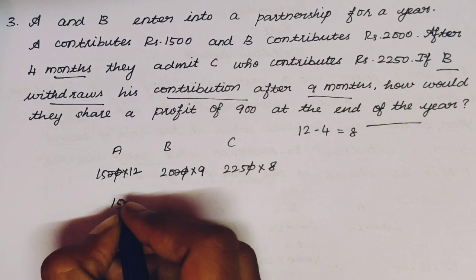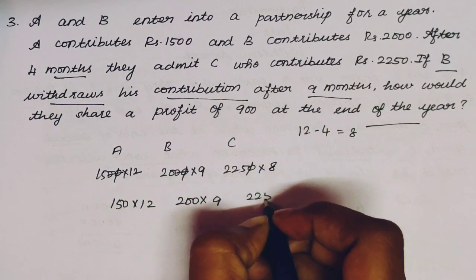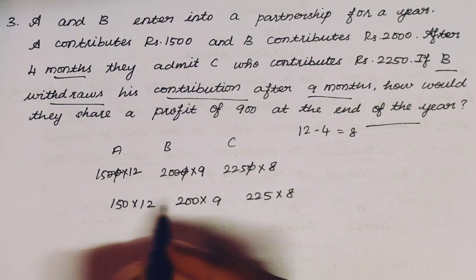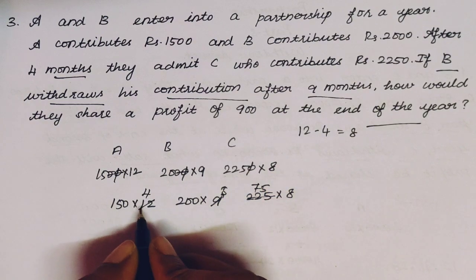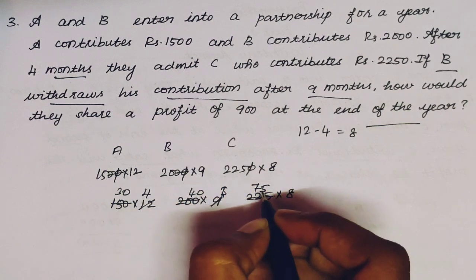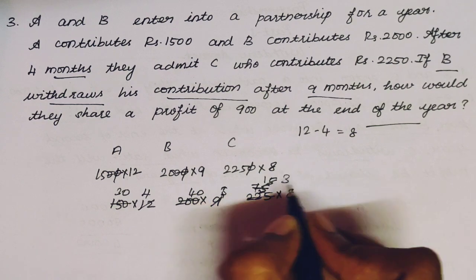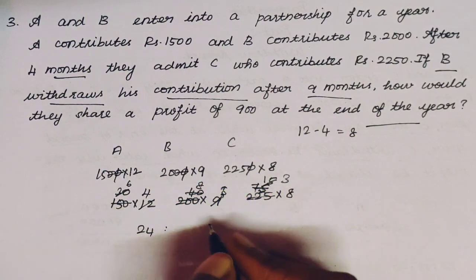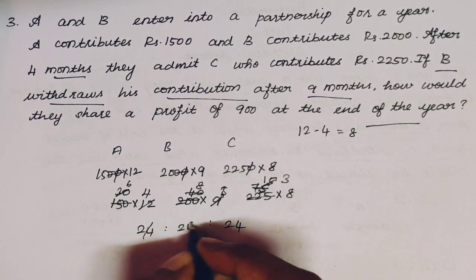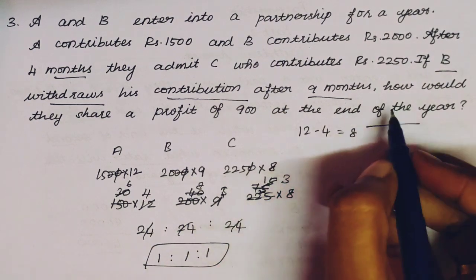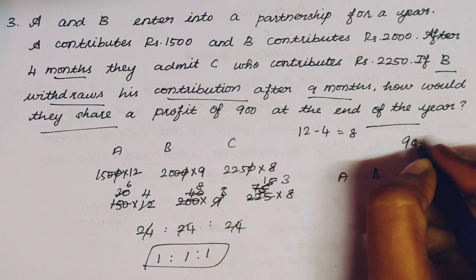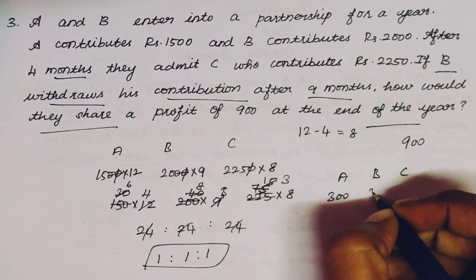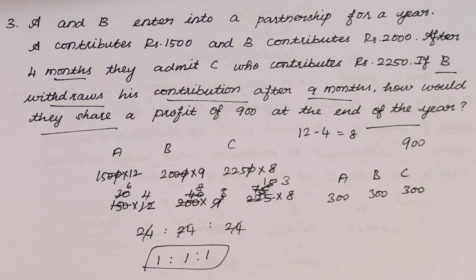The investment-time products are: A = 150 × 12, B = 200 × 9, C = 225 × 8. After cancelling common factors (dividing by 75, then by 5), we get A : B : C = 6×4 : 8×3 : 3×8 = 24 : 24 : 24 = 1 : 1 : 1. Equal profit sharing — each gets Rs. 300. A, B and C each receive Rs. 300.